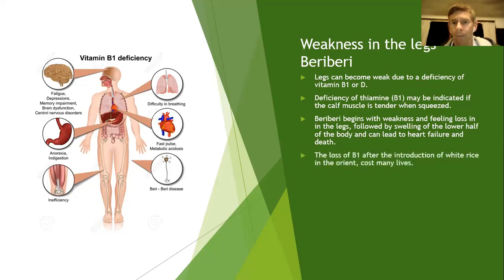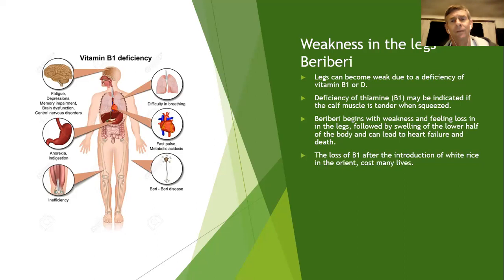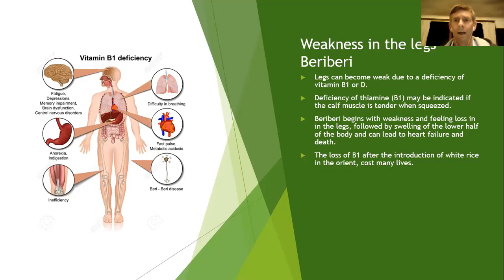The loss of B1 after the introduction of white rice in the Orient cost many lives. When they started processing and polishing rice, the B1 was flushed out - what you're left with is starch with none of the nutrients. Sugar is similar: sugar cane is very healthy, but once all the good stuff is processed out, we're left with the white crystalline substance, which is essentially poison. They polish off the bran from rice and we're left with starch. So always buy brown rice.